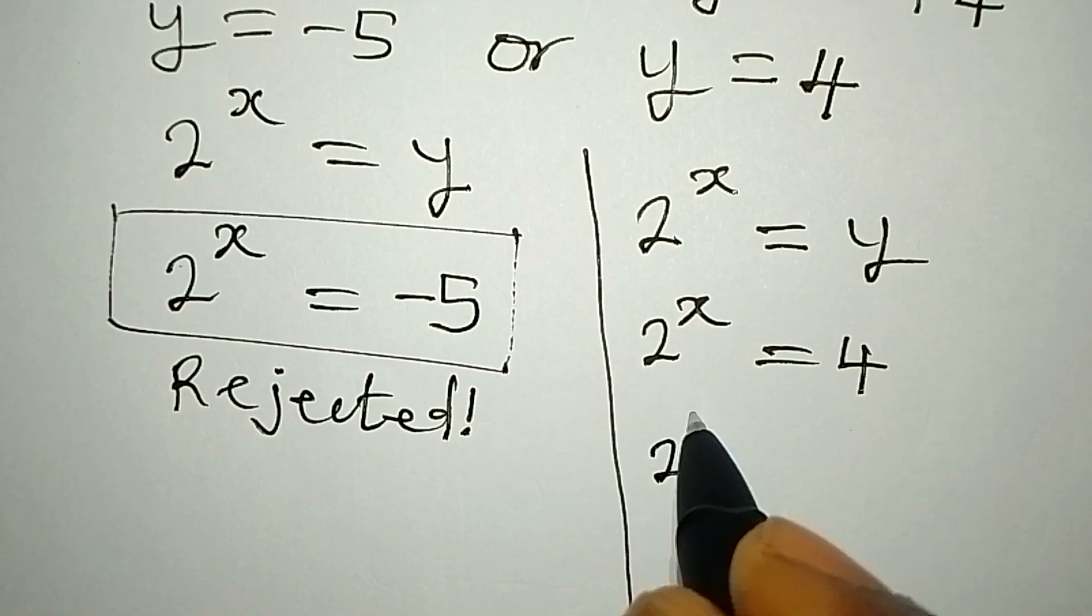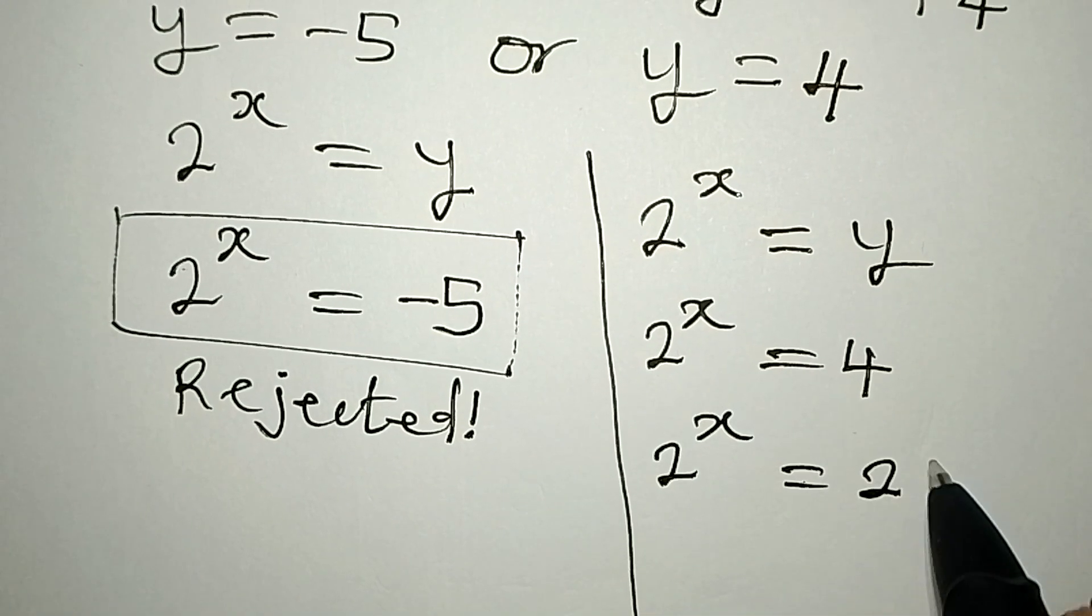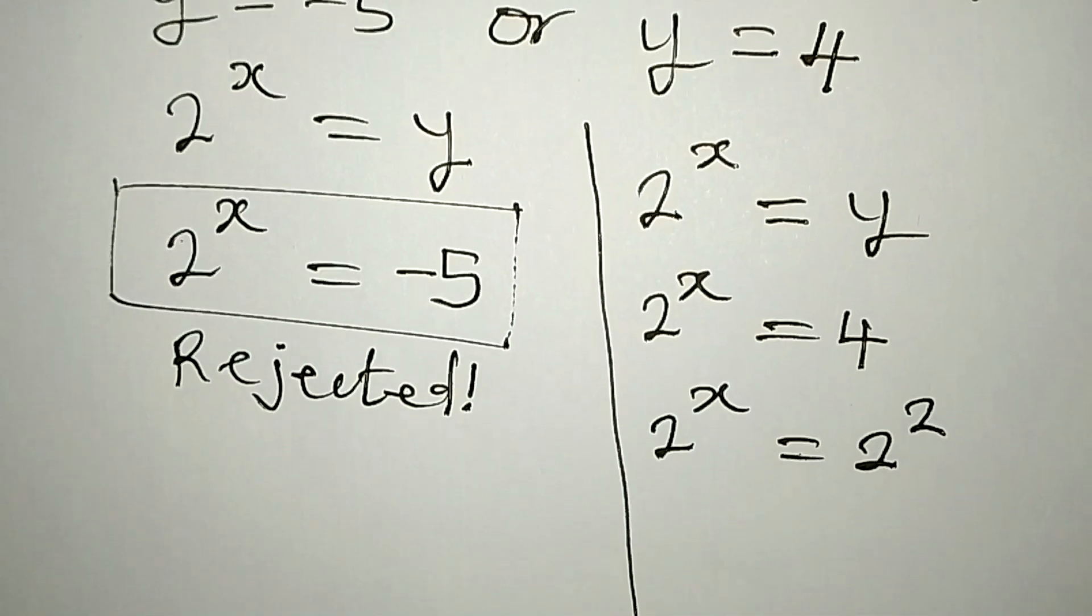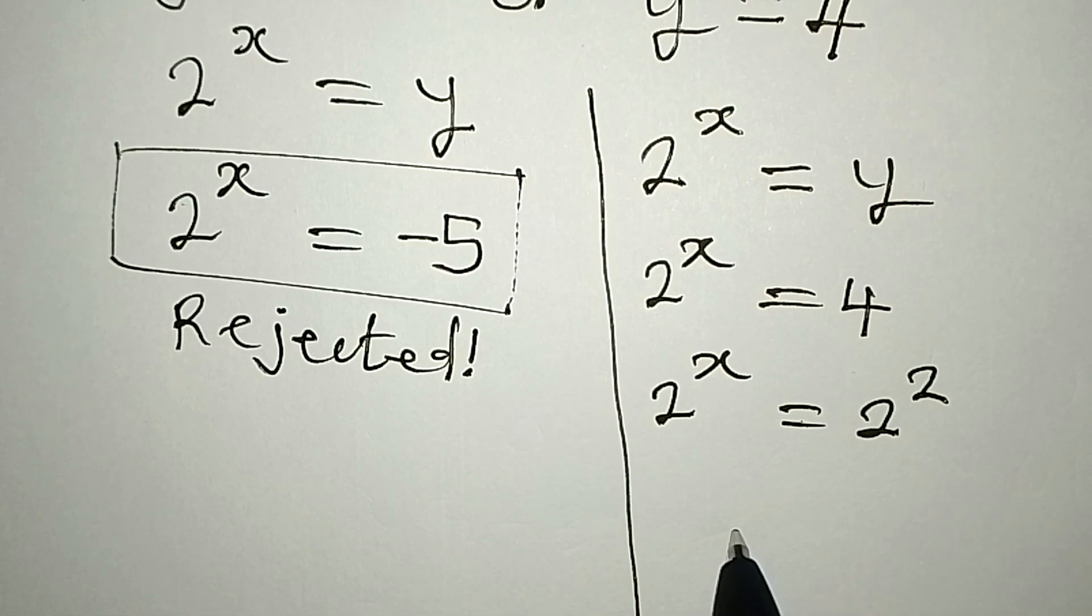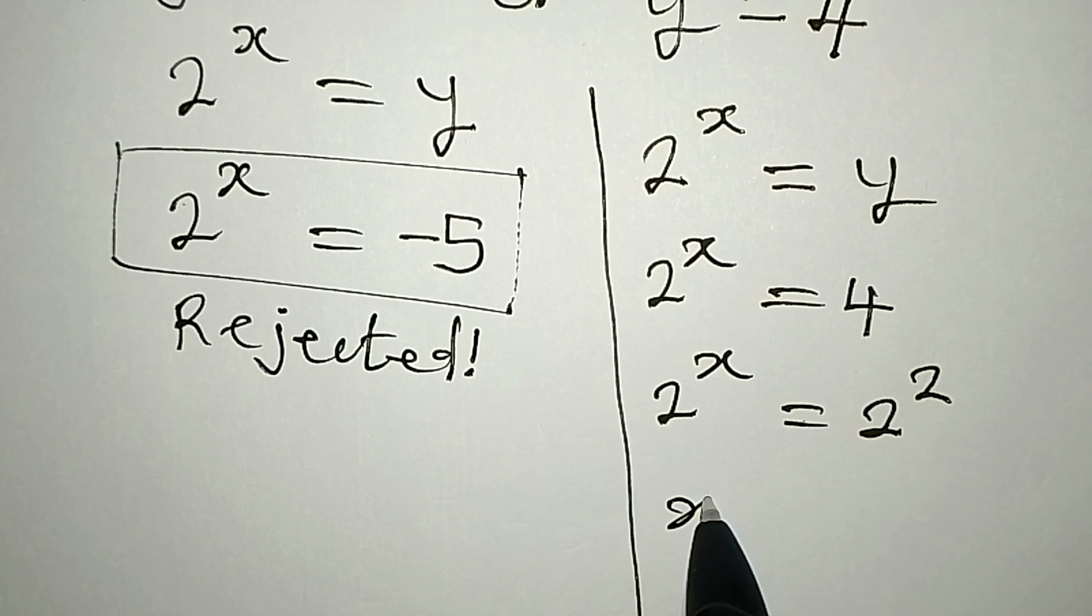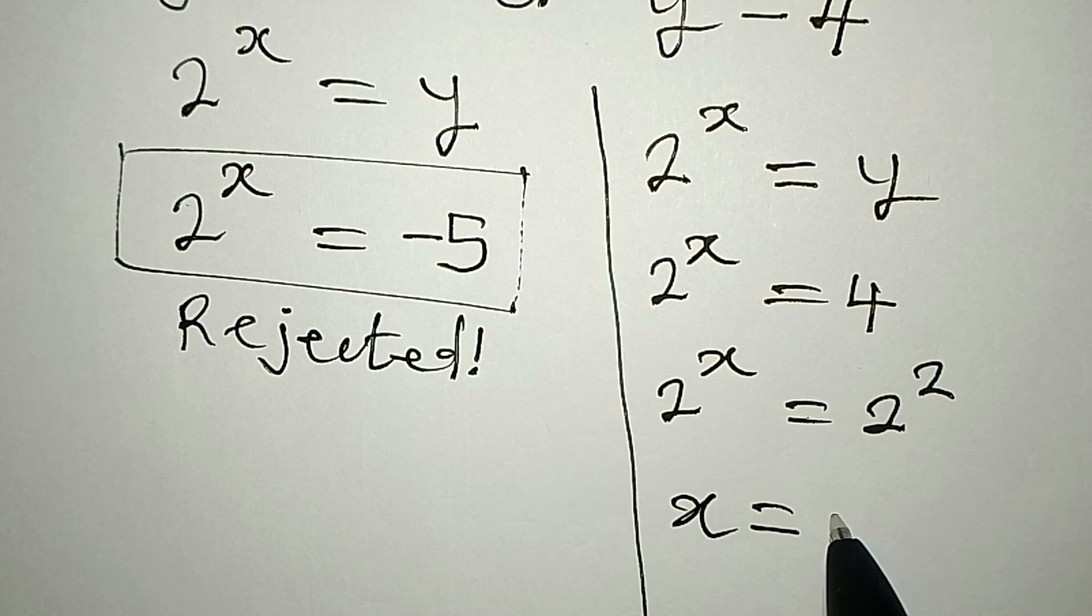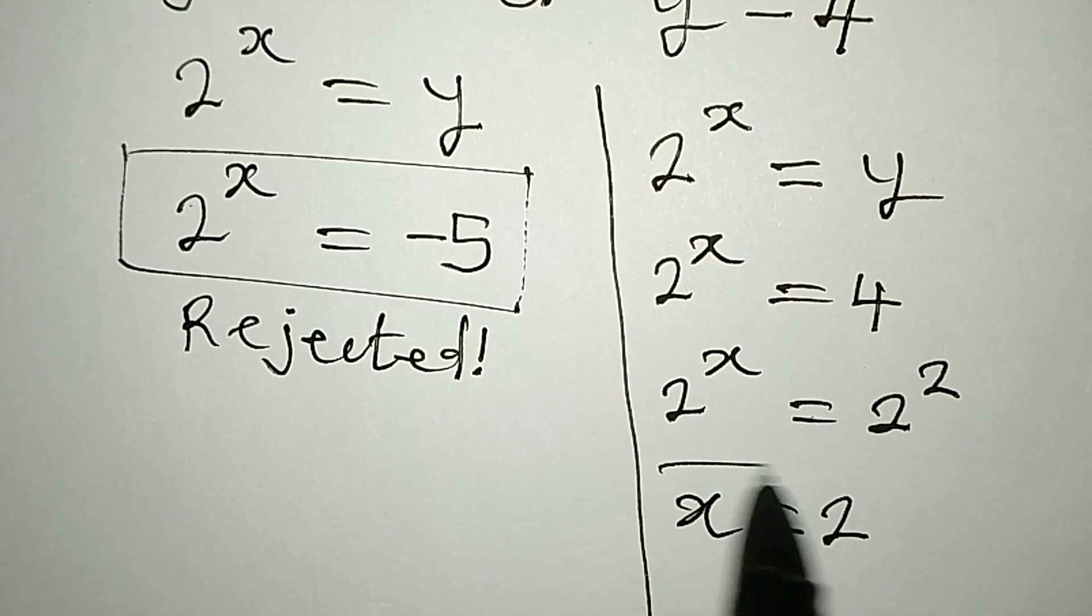Then 2 to the power of x is equal to 2 to the power of 2. Now the bases are the same, we equate the powers. So our x is simply equal to 2. So this is the value of x that satisfies the equation.